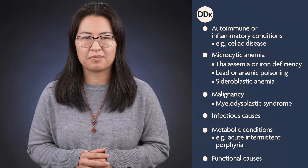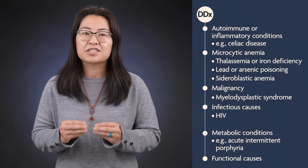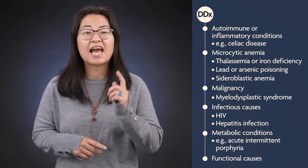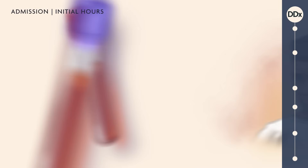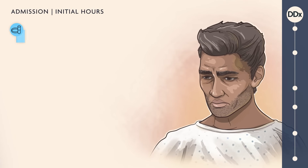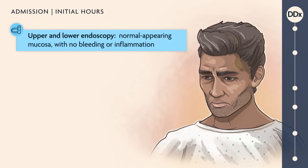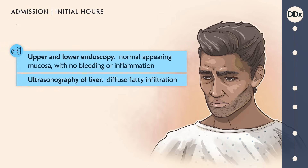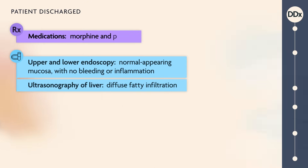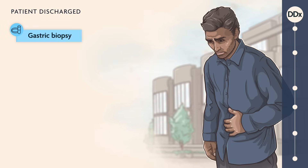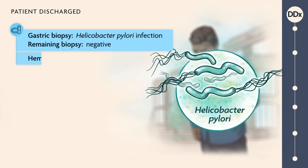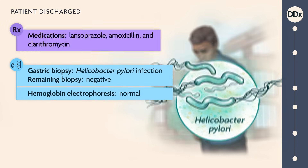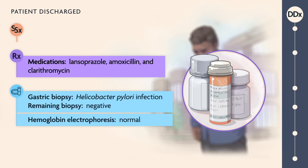It would be worthwhile to measure the blood lead level, since lead poisoning can cause microcytic anemia with basophilic stippling and abdominal pain. Serologic tests for HIV and hepatitis A, B, and C viruses should also be performed, given the patient's transaminitis. The patient was admitted to the hospital. Upper and lower endoscopy revealed normal-appearing mucosa with no bleeding or inflammation. Ultrasonography of the liver revealed diffuse fatty infiltration. The patient was given morphine for pain and discharged home with pantoprazole. After discharge, gastric biopsy specimens showed evidence of H. pylori infection. Hemoglobin electrophoresis was normal. The patient was started on lansoprazole, amoxicillin, and clarithromycin without improvement in his symptoms.